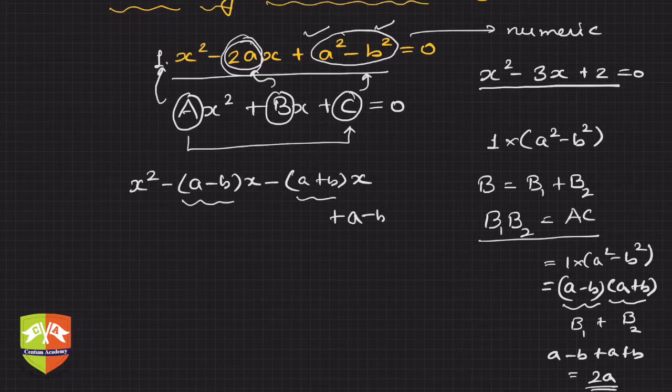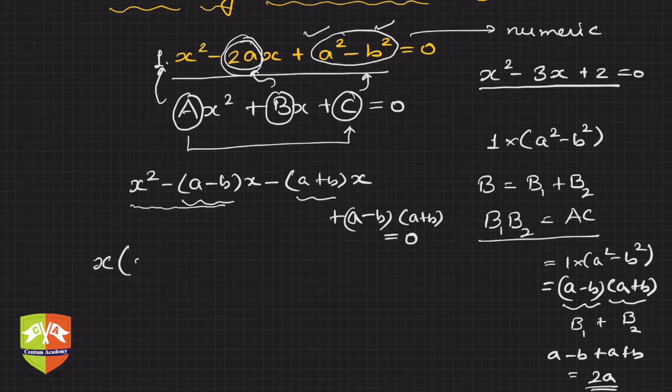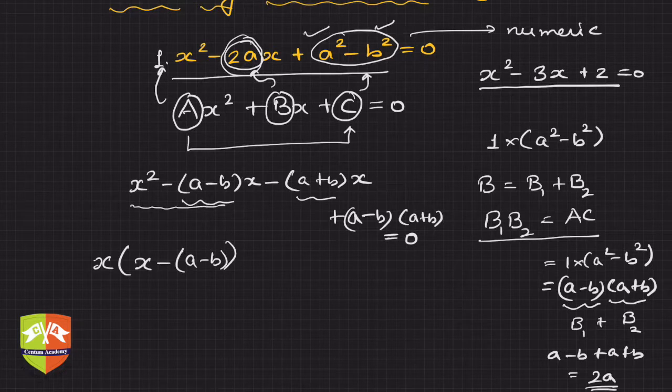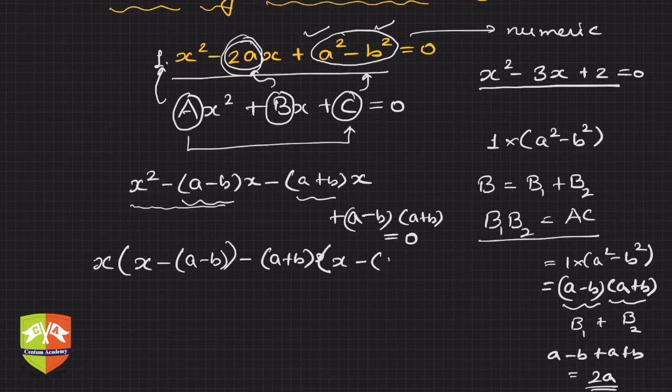And the constant term is (a - b)(a + b) and this equals zero. Now clearly if I take x common from these two, x common gives x(x - (a - b)). In the last two terms you can take (a + b) common, so you get (a + b)(x - (a - b)), and this equals zero.